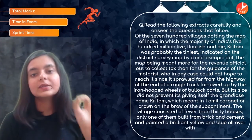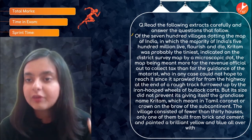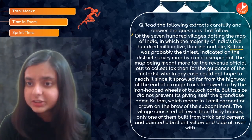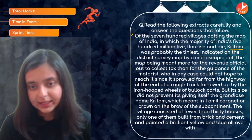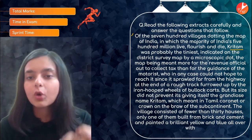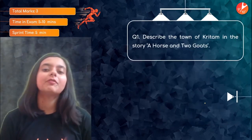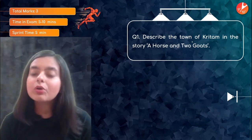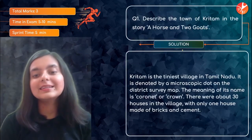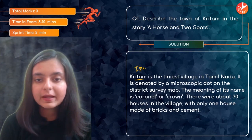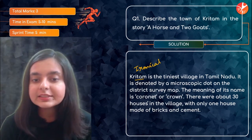Thank you for posting your lovely comments in the homework section. This is a model answer that will help you solve the question. The first extract discusses the village of Krittam. The very first question is: describe the town of Krittam in the story 'A Horse and Two Goats.' You can understand that the name itself is very ironical — it means 'coronet' or 'crown,' which is in stark contrast to what the village actually is.